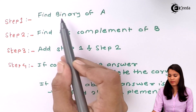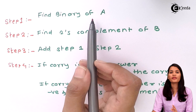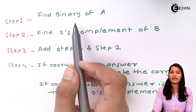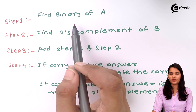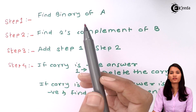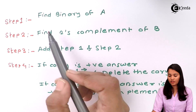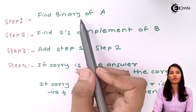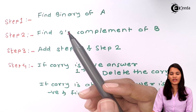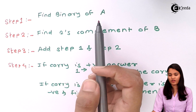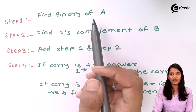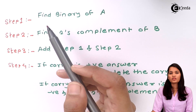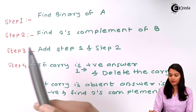The first step is to find the binary of A. Here we have considered two numbers, A and B, where A is our first number and B is our second number. The first step is always to find out the binary of A. For example, if A is 12, we find the binary of 12, which is 1100.